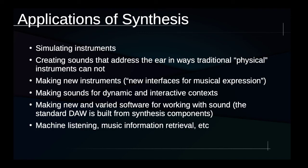New fields like machine listening and music information retrieval depend on synthesis in key ways. Machine listening is a field in which people write algorithms able to recognize things in audio signals automatically. Music information retrieval is a more specific subset of that, doing machine listening specifically to recognize or categorize things about music. This is used on an everyday basis by big platforms, for example, to recognize when a signal contains information that matches another signal — perhaps as an example of copyright infringement. In sum, synthesis has lots of applications.